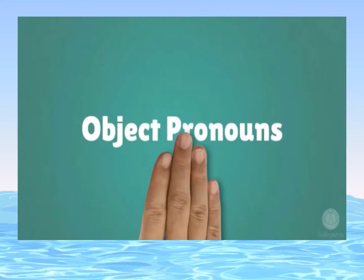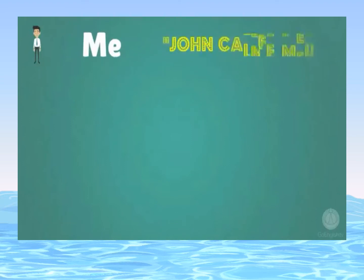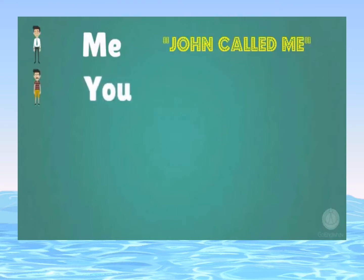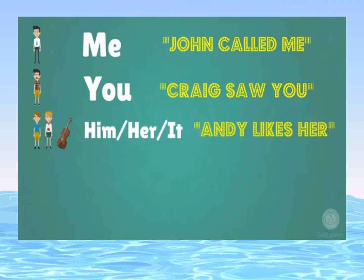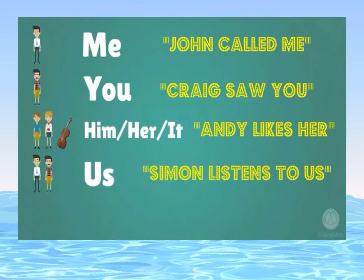Object pronouns: Me — John called me. You — Craig saw you. Him, her, it — Andy likes her. Us — Simon listens to us. Them — I emailed them.